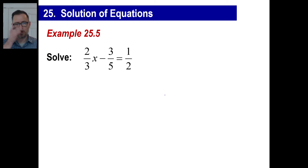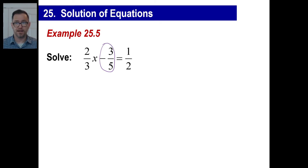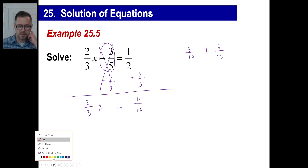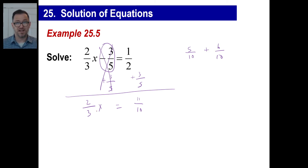Let's try another one — a little different. We have a 2 thirds x, and there's a negative 3 fifths sitting there that we don't want. So we add 3 fifths to both sides. On the right side, we have one half plus 3 fifths. The common denominator is 10: half converts to 5 tenths, 3 fifths converts to 6 tenths, and 5 tenths plus 6 tenths is 11 tenths.